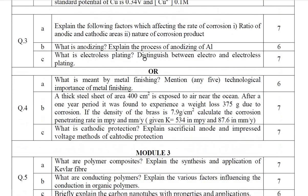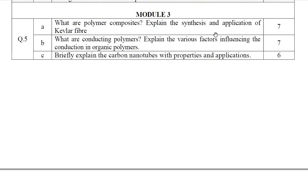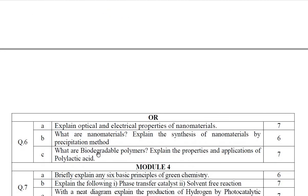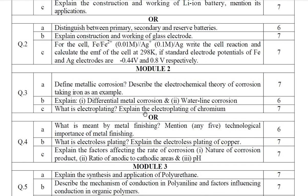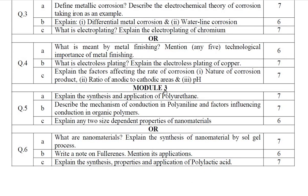Moving on to Module 3 — this is Question 5, covering Engineering Materials. Go through these 3 questions as a reference. There is a possibility of getting the same questions in your examination. From Question Paper Set 1, Module 3 of Engineering Materials, again definitions and related content will be there.